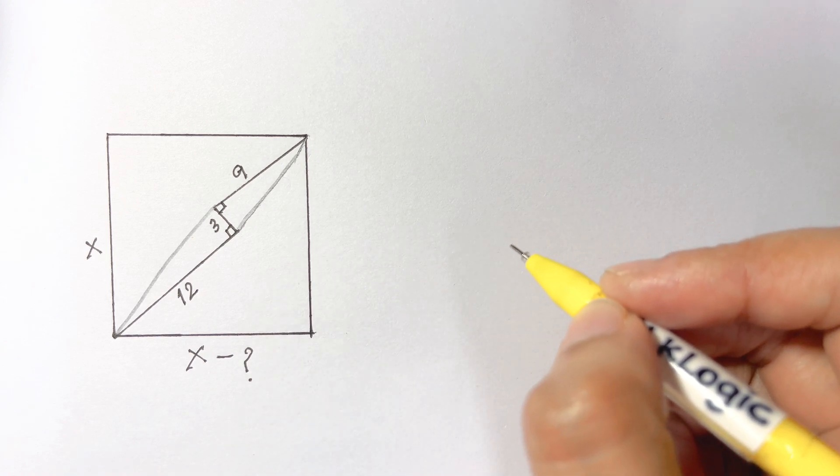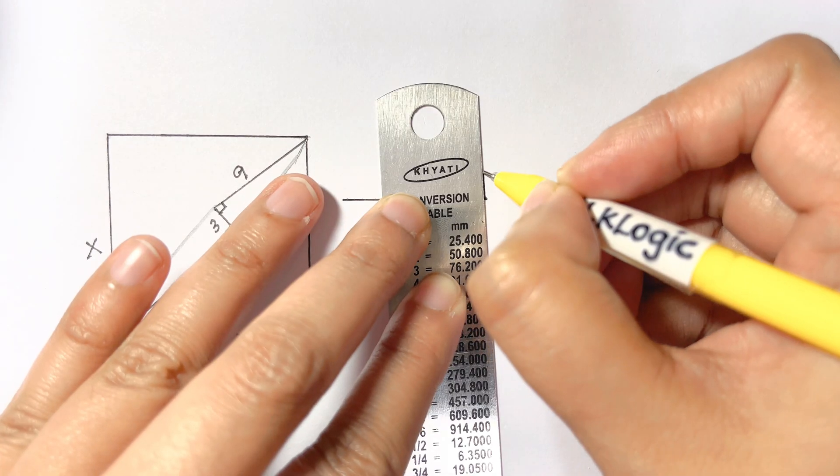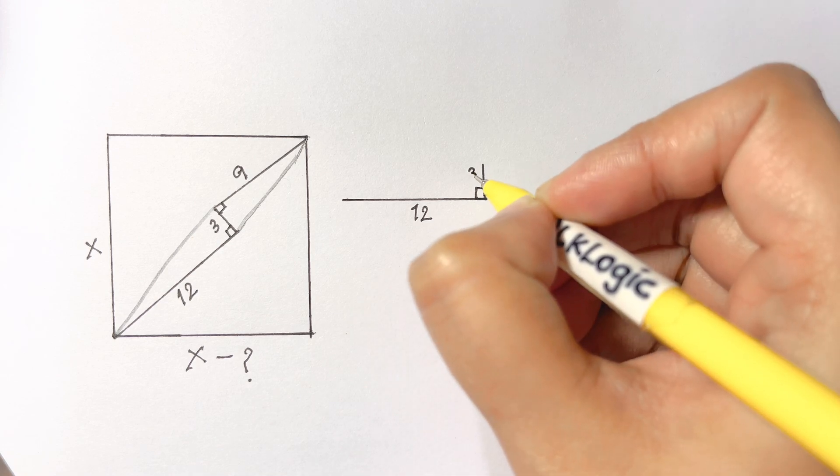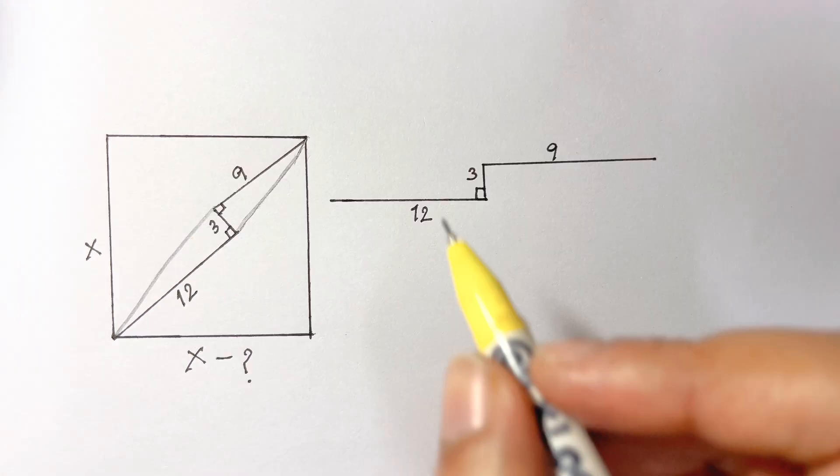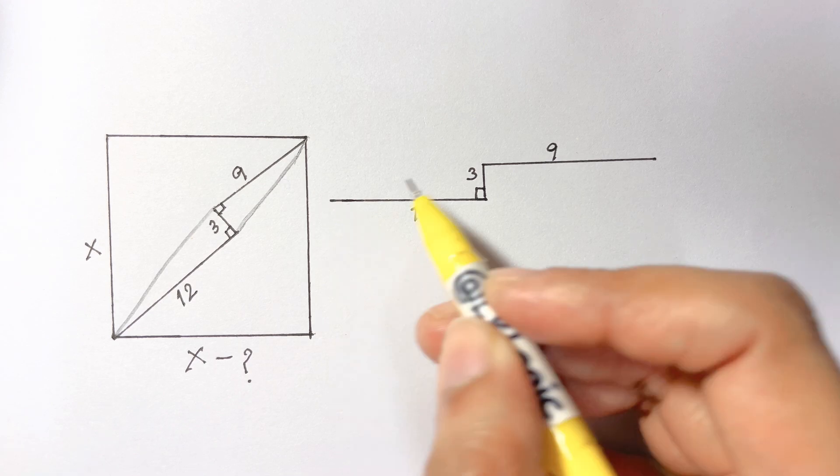Here we have a line segment of 12, at right angle another perpendicular of 3, and also the line segment of length 9. Now if we connect one end of the first line segment and the other end of the second line segment we will get two right triangles.